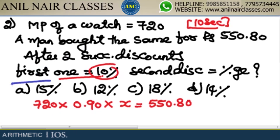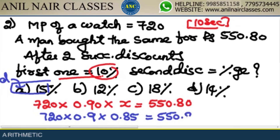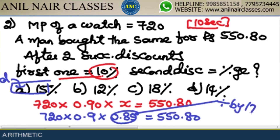If the second discount is 15%, this value will become 720 × 0.9 × 0.85, which should equal 550.80. Now, 0.85 is divisible by 17, since 17 × 5 = 85. So if 0.85 is divisible by 17, then 550.80 should also be divisible by 17.